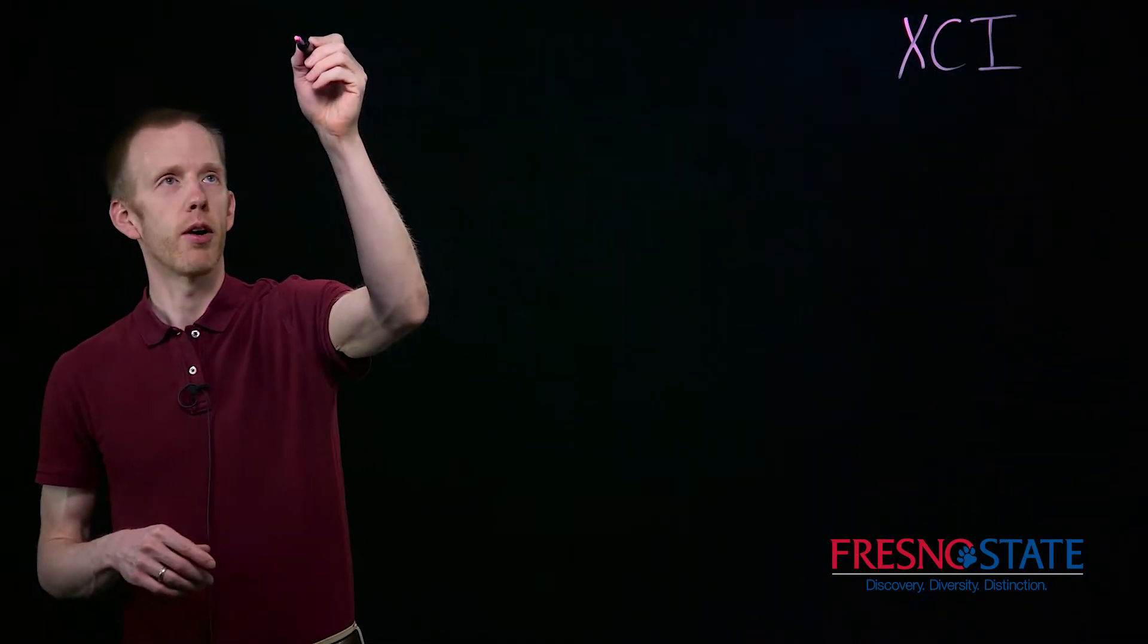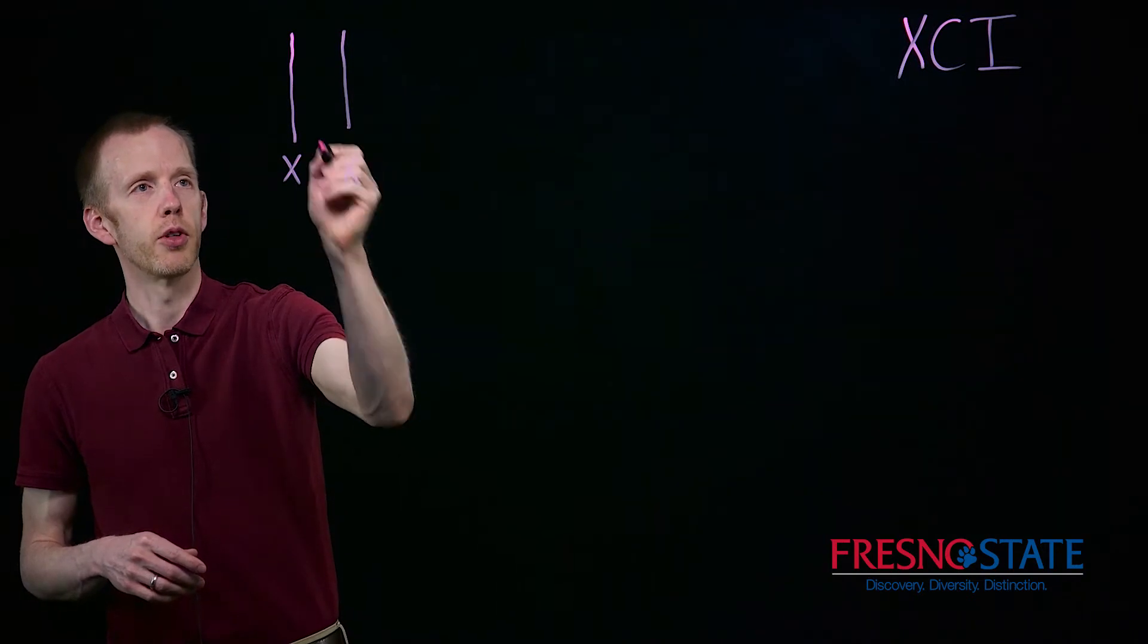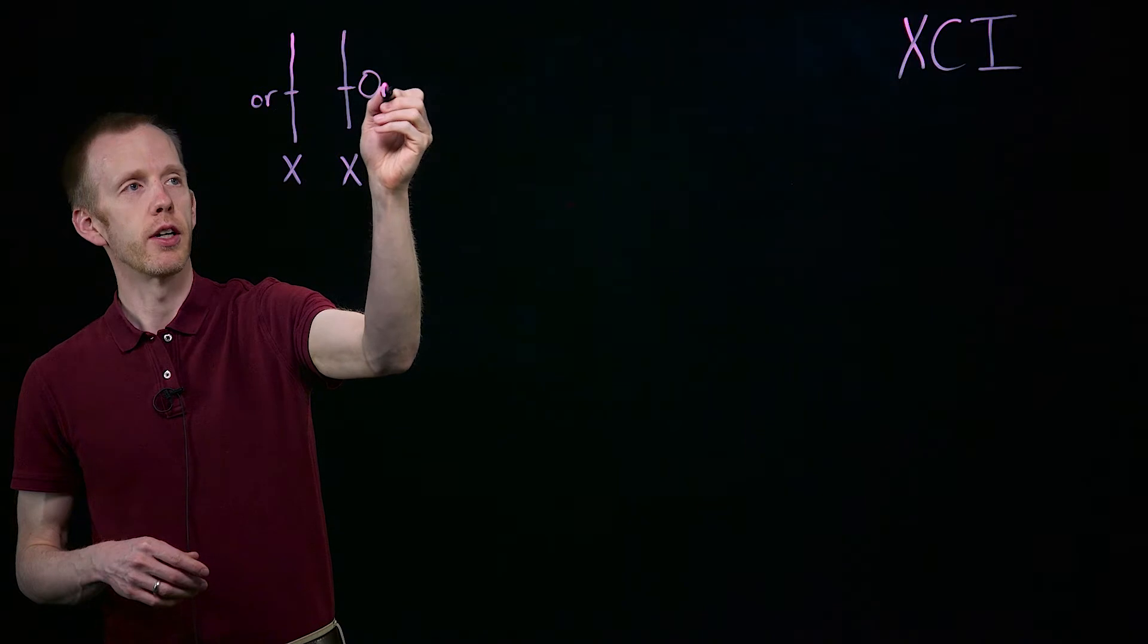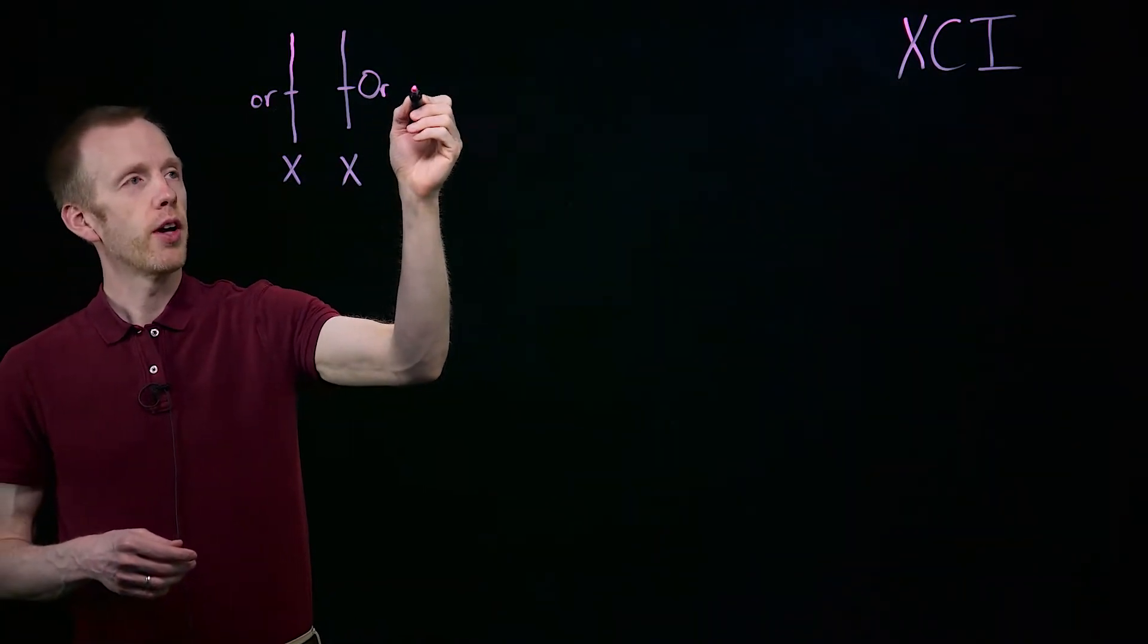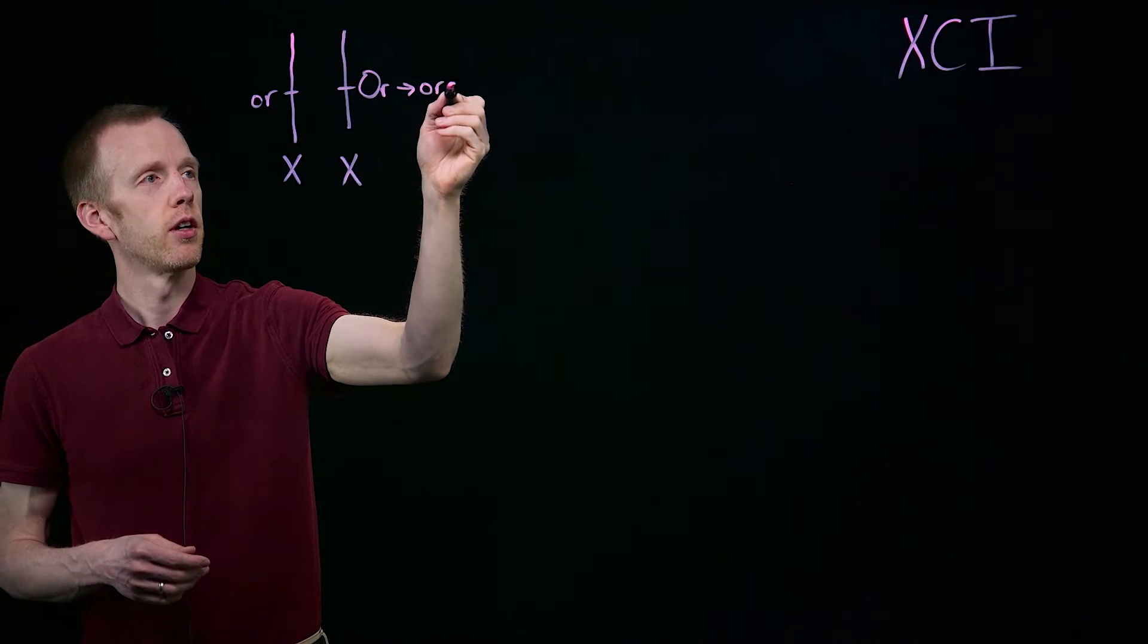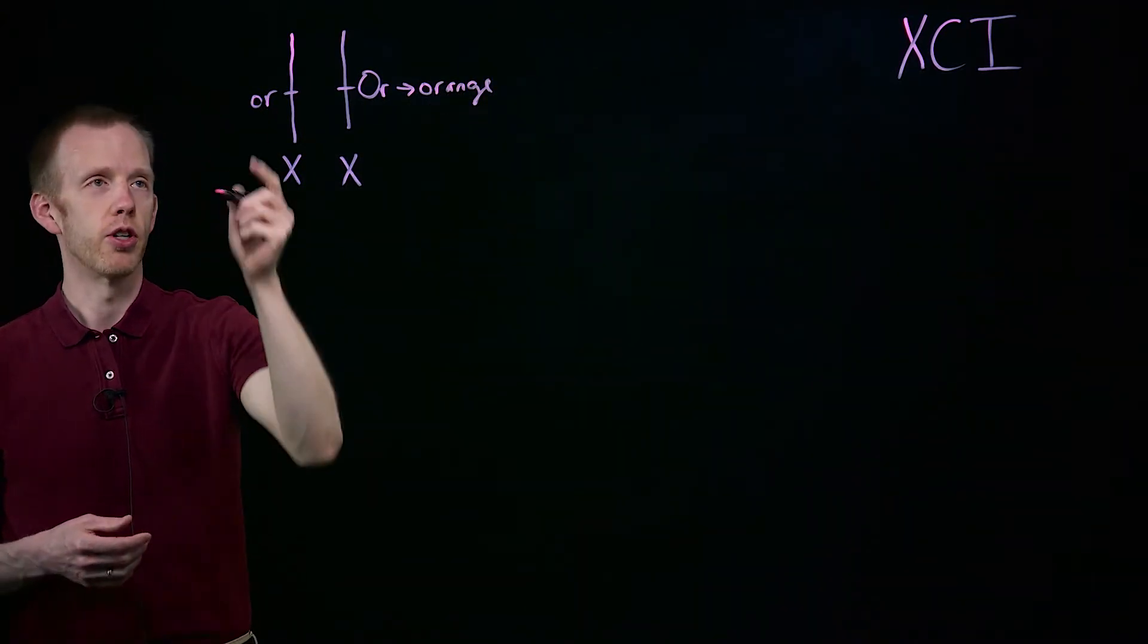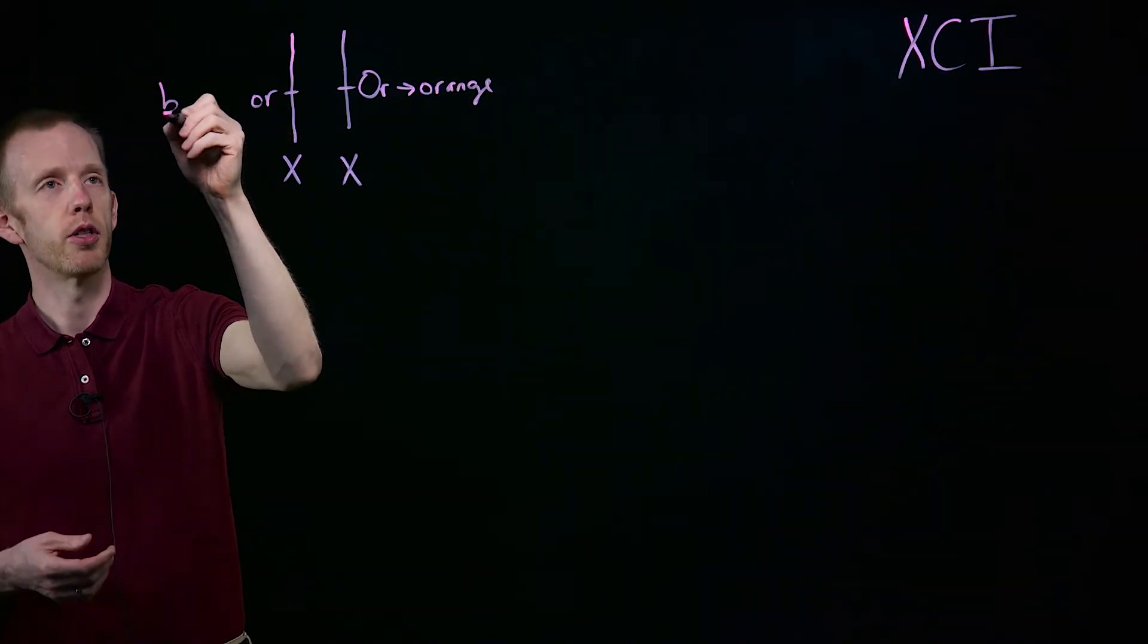This is a situation where, for example, in a tortoise shell cat, on their X chromosomes there's a gene called the orange gene. There could be two alleles, with a lowercase o and an uppercase O, where the wild type produces an orange pigment, and the other version with the lowercase o doesn't produce orange pigment, it produces black pigment.